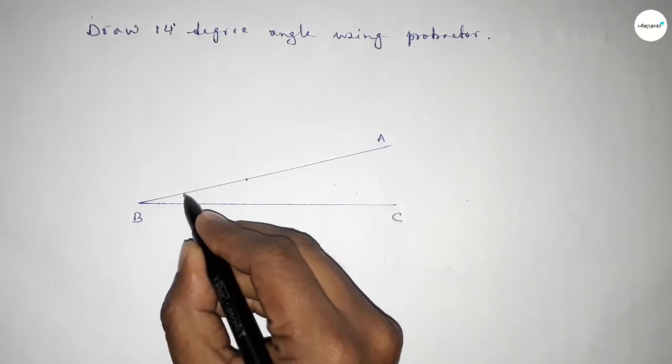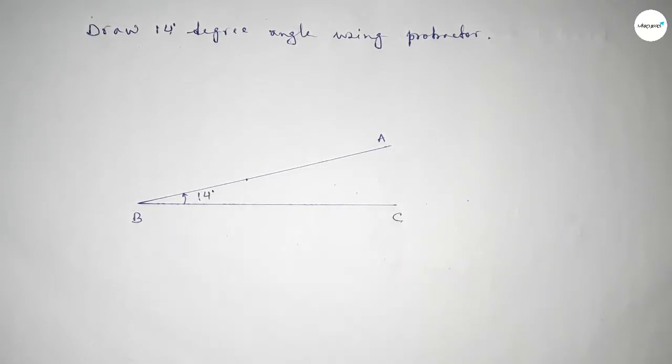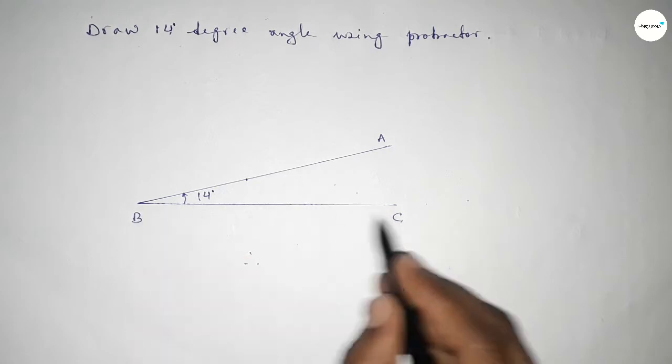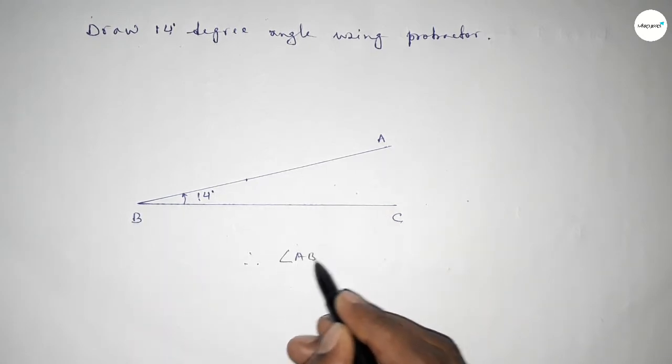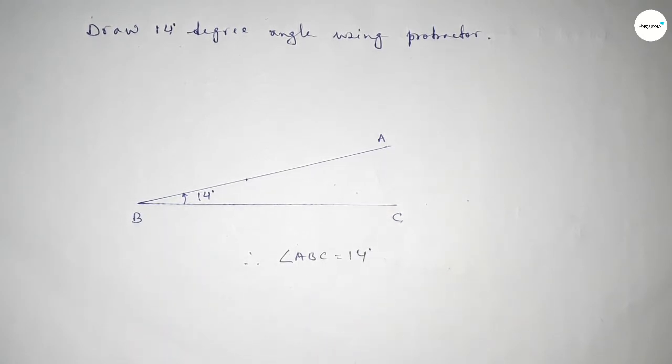Taking here point A. So angle ABC, this is 14-degree angle, therefore angle ABC equals 14 degrees.